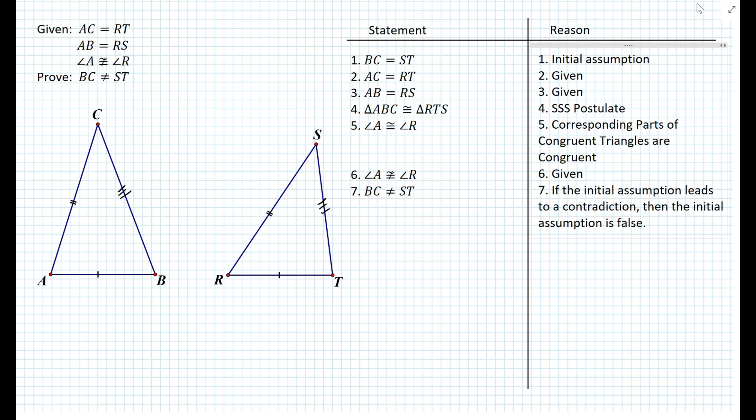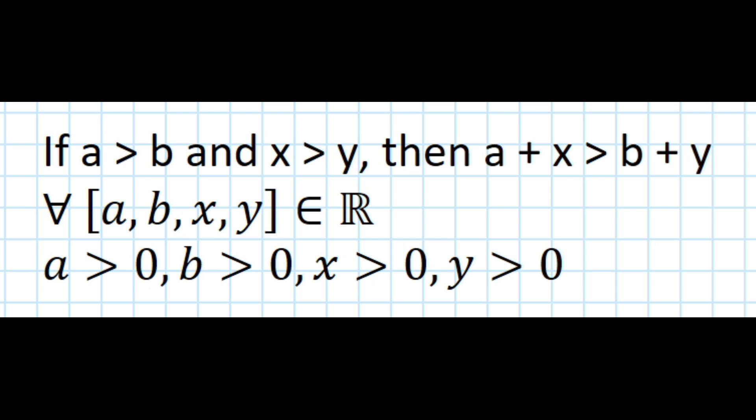Let's look at a proof involving inequalities and how we apply indirect methods here. If A is greater than B and X is greater than Y, then it must be true that A plus X is greater than B plus Y, for all A, B, X, Y that are real numbers, where A, B, X, and Y are all greater than zero. For this particular problem, I'm going to write a paragraph proof rather than a statement-reason table because it becomes a little more complicated.